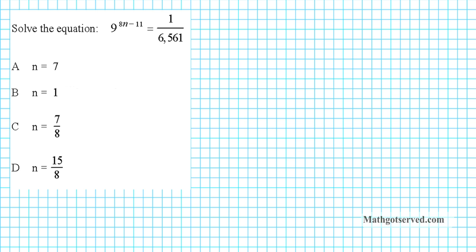Alright, let's take a look at the last example. So for this one, we are to solve this equation. 9 to the 8n minus 11 equals 1 over 6561. So to do this, the question is, can we express this fraction on the right at the power of 9?